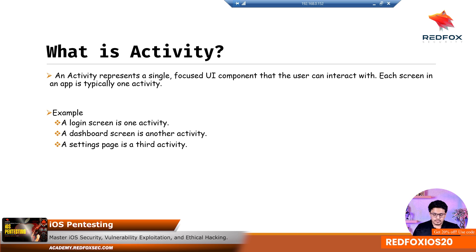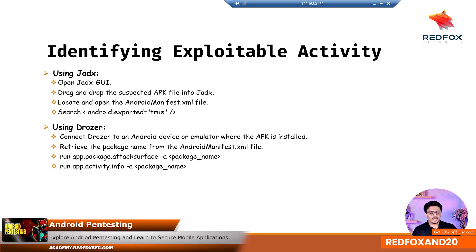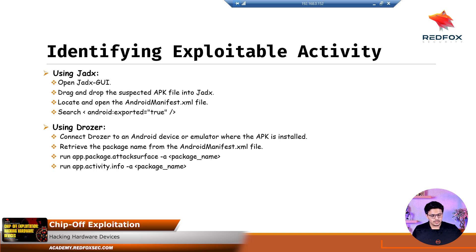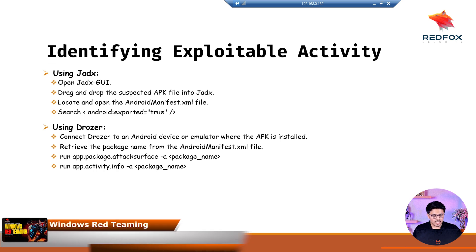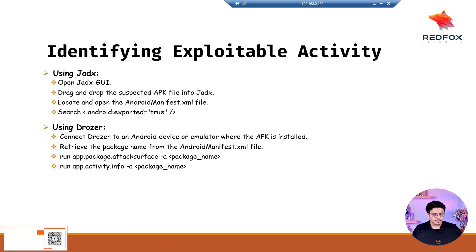How can you use Drozer to identify if a particular activity is exploitable and how to exploit it? There are two methods to identify exploitable activities: first, we can use JADX GUI, and we can also use Drozer. Using JADX GUI, we open JADX, drag and drop our vulnerable APK file, locate the AndroidManifest file, and search for android:exported="true". When exported is true but no permissions are assigned, we can potentially exploit those activities.